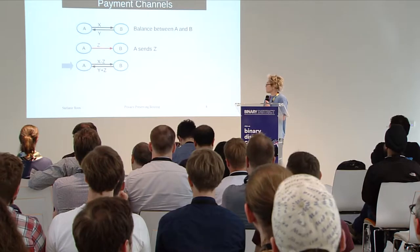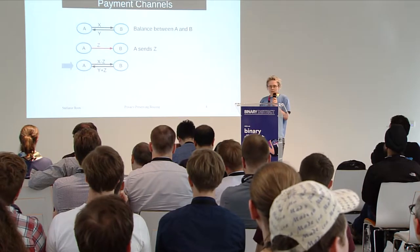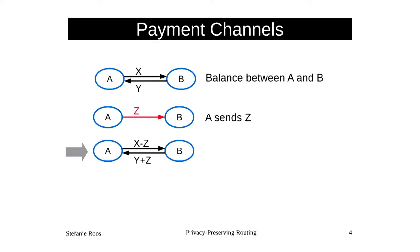When A actually sends some amount Z, the balance of the payment channel changes. A can now only send X minus Z to B, but B on the other hand could send Y plus Z to A. So this is what happens when the network changes, and there are a couple of networks for which this might be applicable.